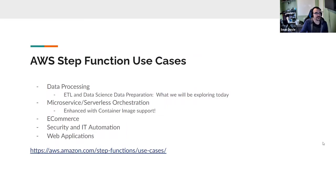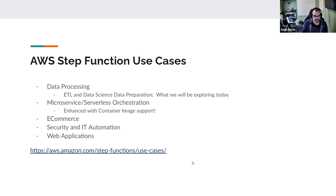There are multiple use cases for Step Functions. The demo I'll be showing today is part of a solution I did for my AWS AI/ML Black Belt — an ETL process using AWS Lambda and various Python libraries for data science preparation work: extract, transform, load, and normalizing the data. You can also use this for microservice and serverless orchestration, hosting whole web apps, or security and IT automation. It can all be chained together with the power of AWS.